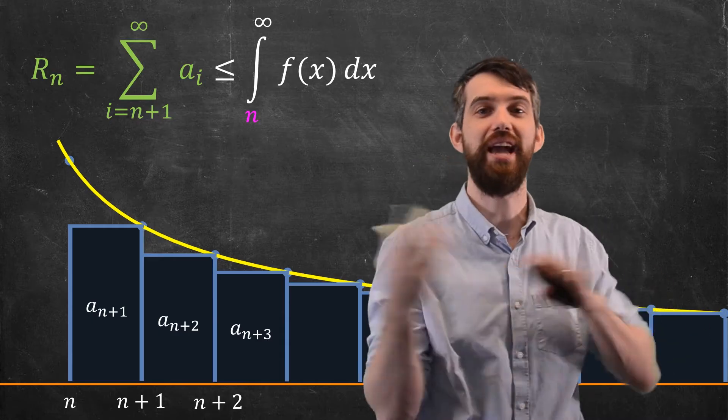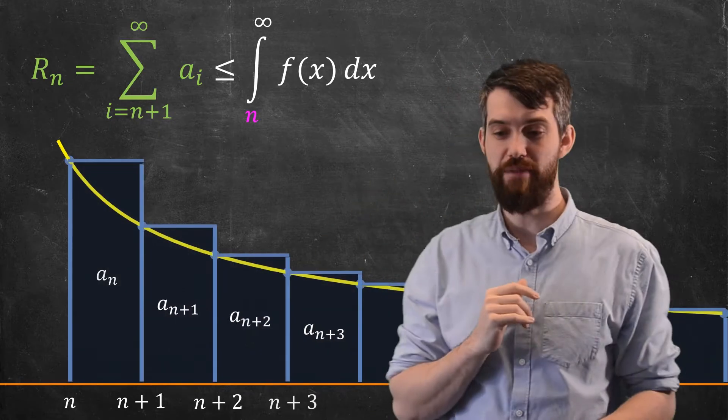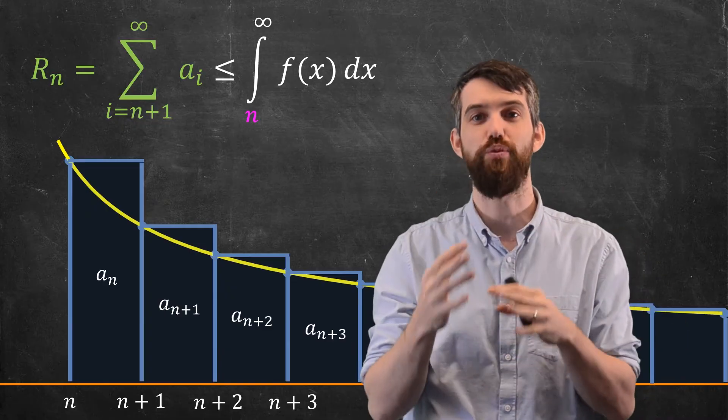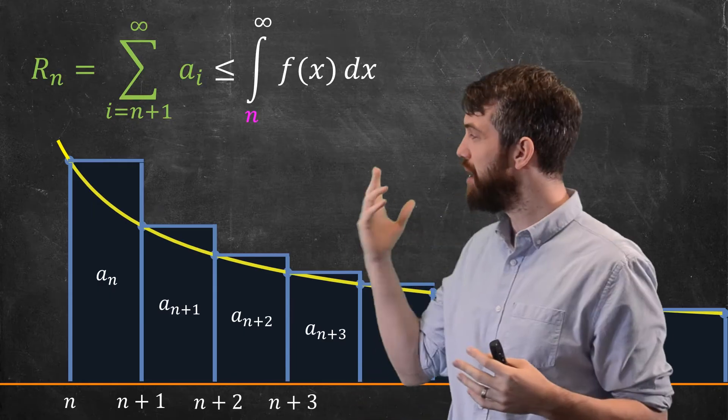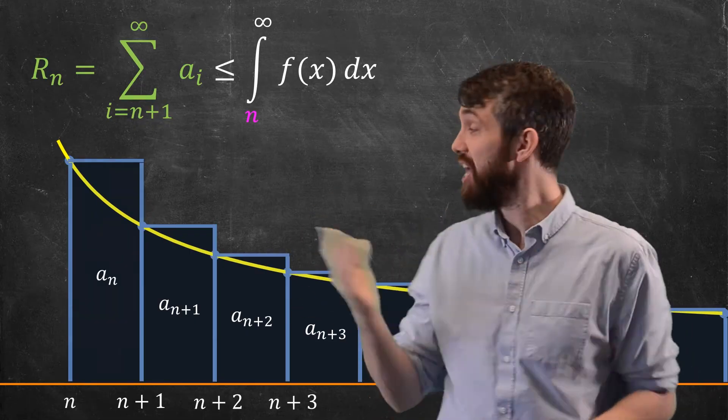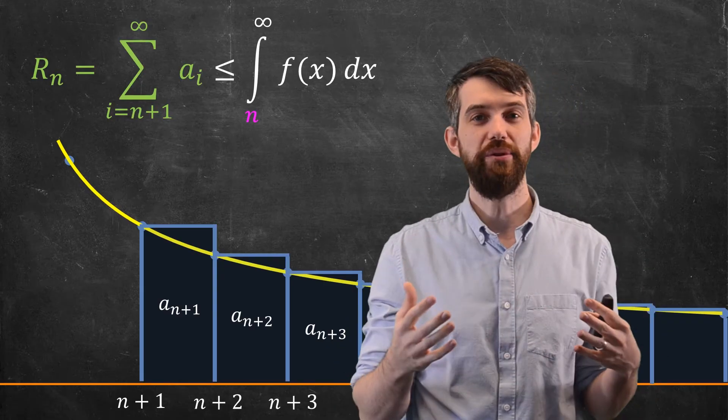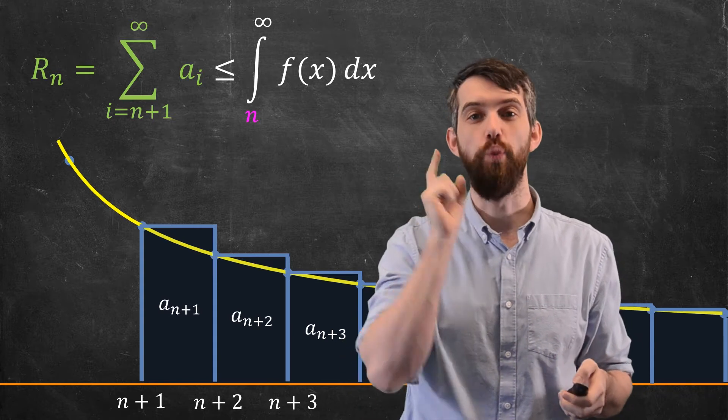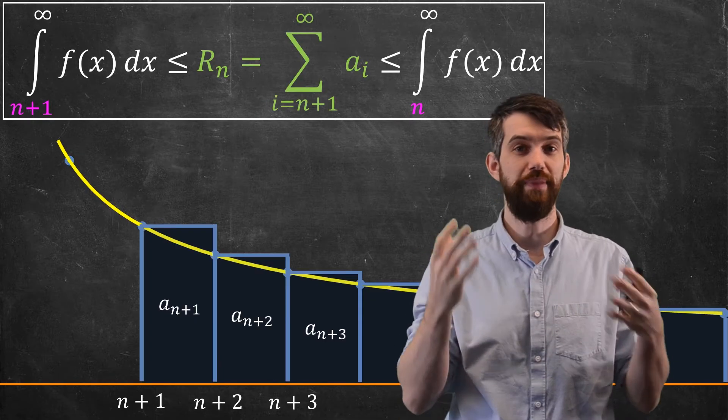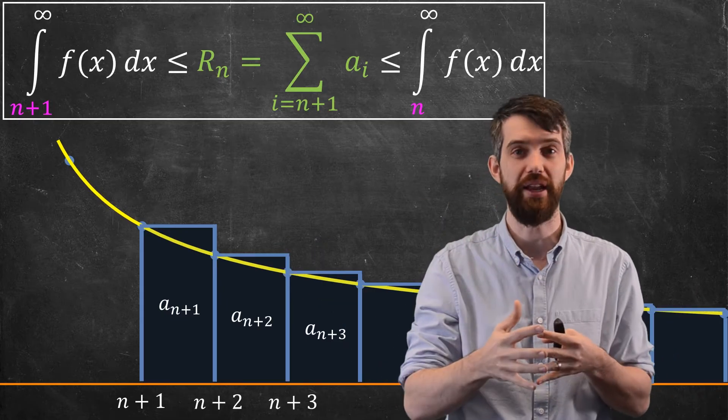I want to do the same trick on the other side to bound the remainder in the other way. I'm going to use left endpoints instead, which makes all my rectangles bigger. The first one has area AN, the second AN plus 1, the third AN plus 2, and so on. But my remainder formula only starts at AN plus 1, so this first rectangle with area AN, let's just get rid of that entirely. Now this series is all bigger than the integral starting at n plus 1 up to infinity. So the remainder term is bigger than the integral from n plus 1 to infinity, and it's squashed between these two integrals.